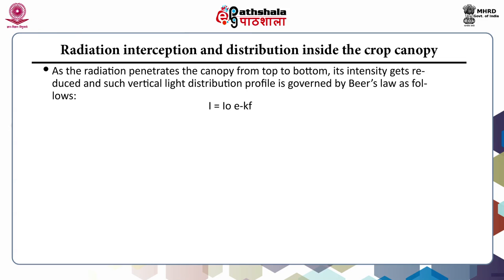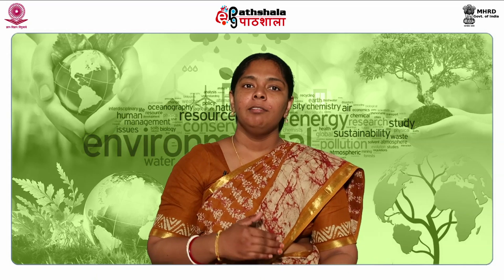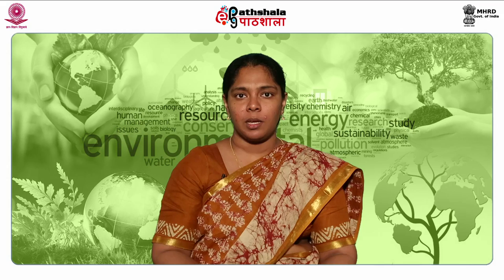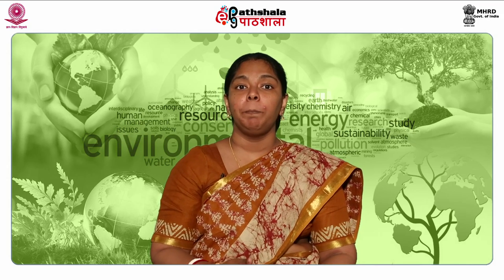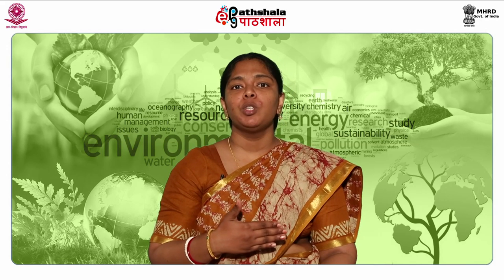Beer's Law is expressed as: I = I₀ × e^(−KF), where I is the intensity of light at a particular height within the canopy, I₀ is the intensity at the top, K is the light extinction coefficient of the leaf (the ratio of light lost through the leaf to light at the top), F is the leaf area index (LAI), and e is the base of the natural logarithm. The rate of photosynthesis and radiation use efficiency of the plant is dependent on PAR absorbed by leaves and green tissues within the canopy.